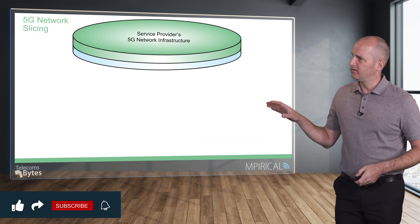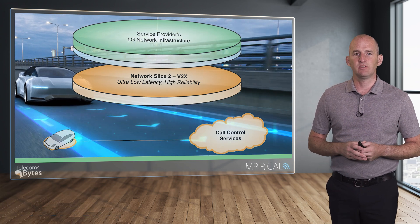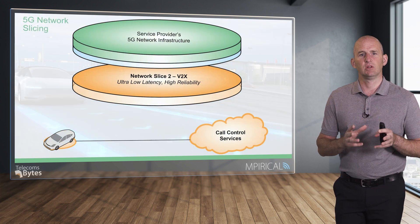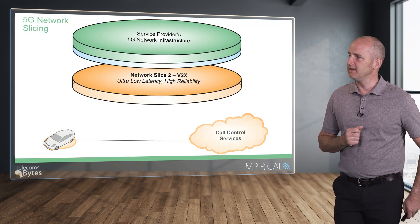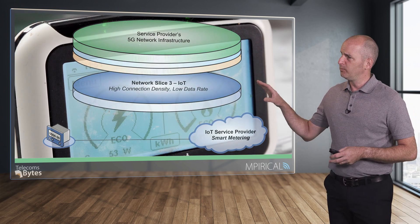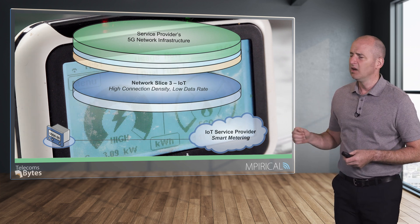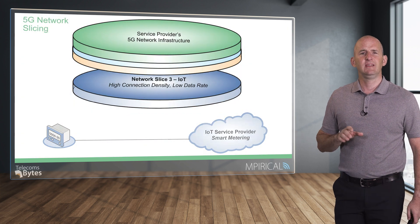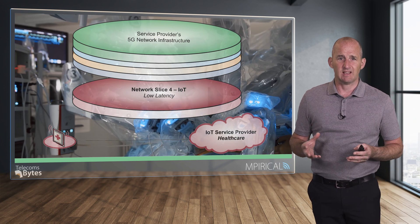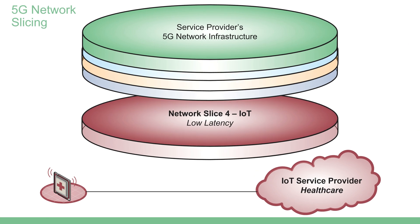We could develop different network slices for different services and use case scenarios. Here we've got a V2X network slice centric towards ultra-low latency and very high reliability. We've got a network slice related to IoT where we would be dealing with a very high connection density — potentially millions of devices — but relatively low data rates. And then finally we've got a different IoT slice that doesn't necessarily have a high connection density, but it certainly does have low latency requirements.